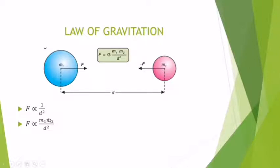When we combine these two parts, we have F is directly proportional to M1 and M2 divided by D square. When we remove the sign of proportionality, we insert a constant here. That is, capital G.